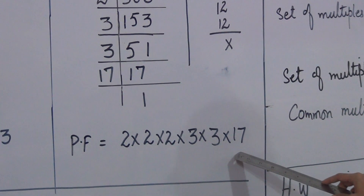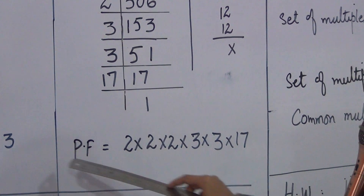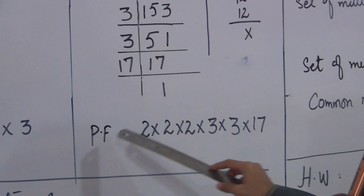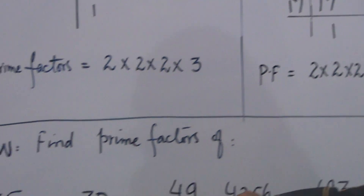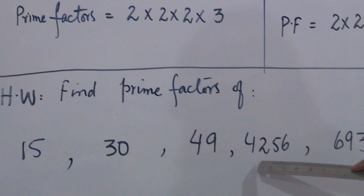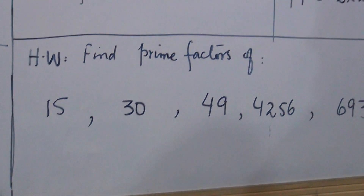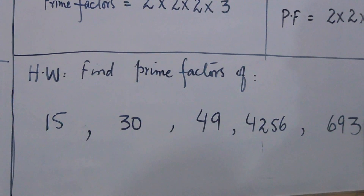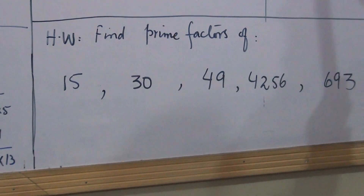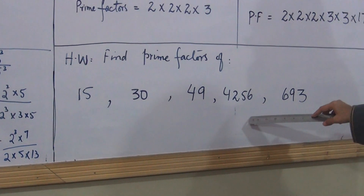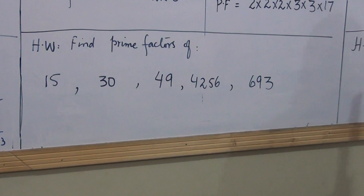Now, using this method, you have to solve the following numbers for practice as homework: 50, 30, 49, 4256, and 693. Solve these questions using the same method. Now exercise number 2.